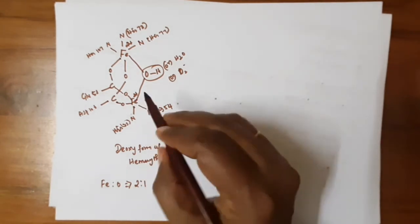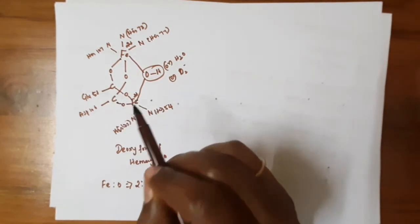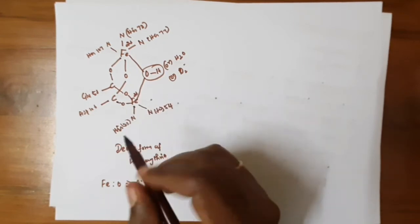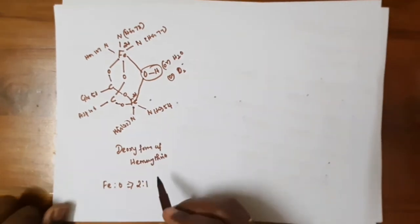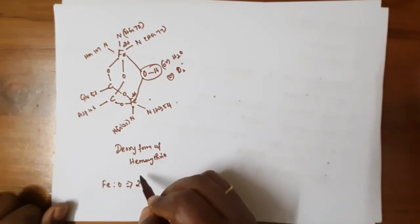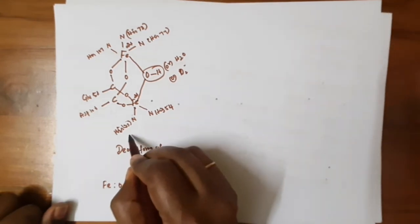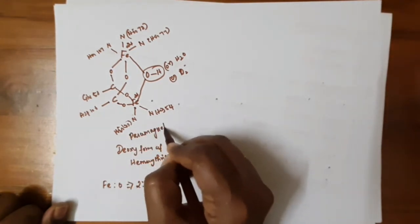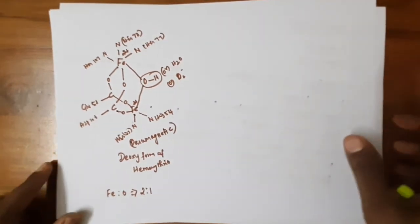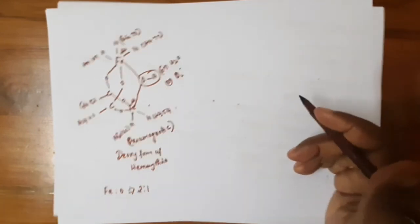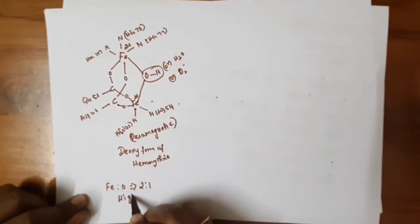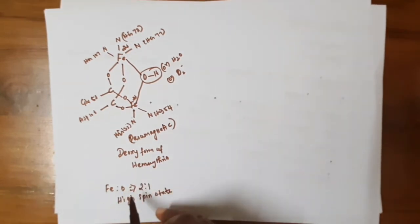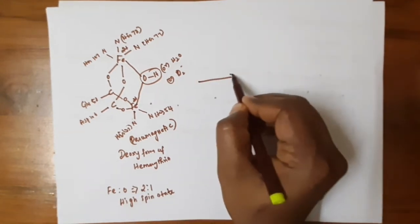In hemerythrin, the oxygen binding ratio is 2:1 — two iron atoms bind one oxygen molecule. Each subunit of hemerythrin binds only one oxygen. In the deoxy form, the iron atoms are in the +2 state and the complex is paramagnetic — the iron is in what is described as a pale pink state.